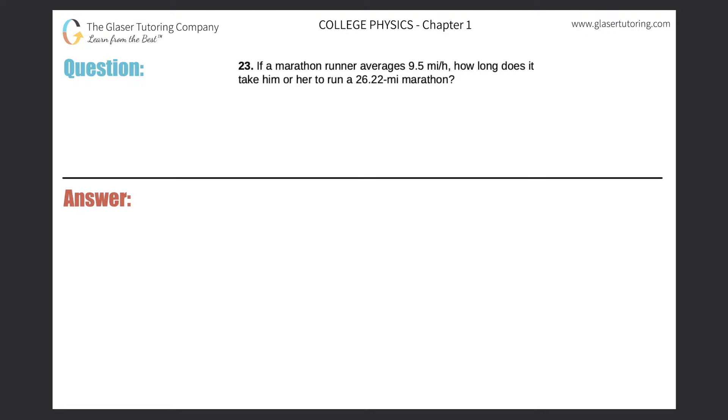Number 23: If a marathon runner averages 9.5 miles per hour, how long does it take him or her to run 26.22 miles? Okay, so we can set up a simple proportion in order to find the answer.